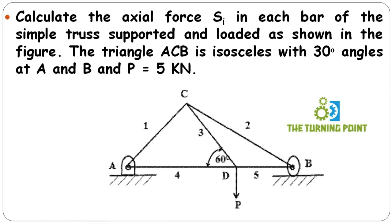Calculate the axial force S_i in each bar of the simple truss, supported and loaded as shown in the figure. The triangle ACB is isosceles with 30-degree angles at A and B, and P is equal to 5 kN. To calculate all the axial forces in the members, the method of joints is preferable.